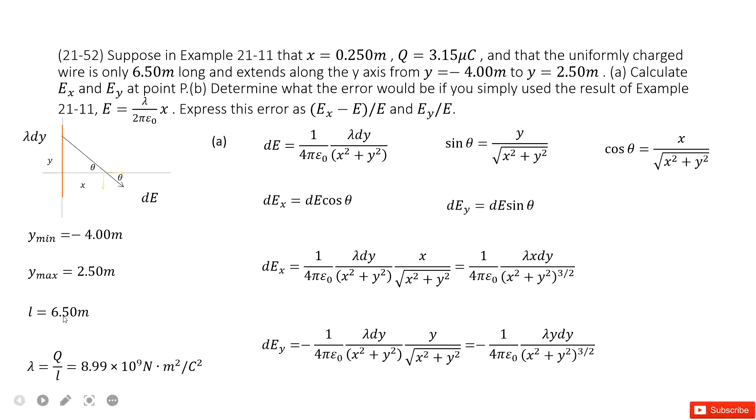The length is given as 6.5m. It's located from ymin to ymax. This distance is given, and the total charge Q is also given. We can get the charge density - this is the total charge divided by wire length, and we get the answer there.